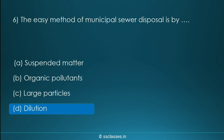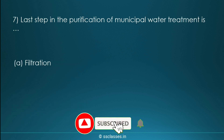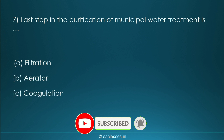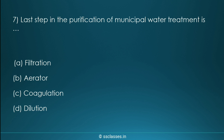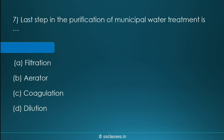Question seven: the last step in the purification of municipal water treatment is filtration, aerator, coagulation, or dilution? We discussed that aerator is the first method, but the last step is filtration — this is the last step to obtain very pure water.